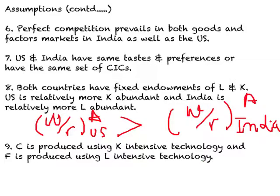Since the U.S. has relatively more machines per worker and clothing is produced using capital-intensive technology, the U.S. must be producing relatively more clothing relative to food. Comparing this to India: food is produced using labor-intensive technology and India is relatively labor-abundant, which means India must be producing relatively more food relative to clothing.